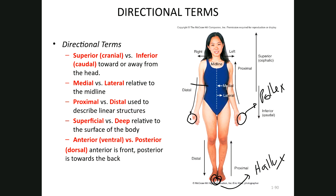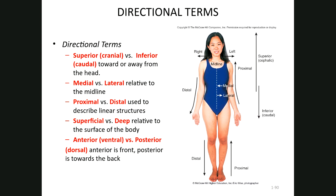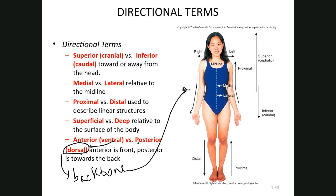The other terms to note are anterior and ventral, and posterior and dorsal. Because human beings walk upright, anterior and ventral — which means belly — are synonyms and can be used interchangeably. Similarly, dorsal means backbone or vertebral column, so because you walk upright, the backbone is on the back. Posterior and dorsal are also synonyms in humans. Ventral is a synonym for anterior.